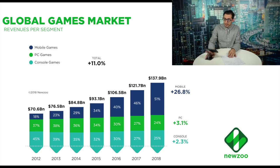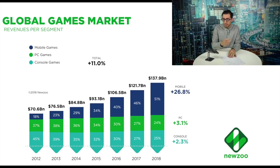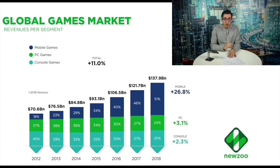I'm going to start with the market — where it was before and where it's going now — so we have some context when talking about specific things in the game industry. Let's go back to 2012, when consoles had 40% of the market, PC accounted for 37%, and mobile 18%, making the total industry around 70 billion US dollars.